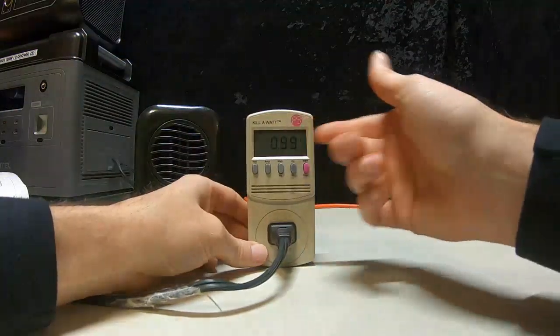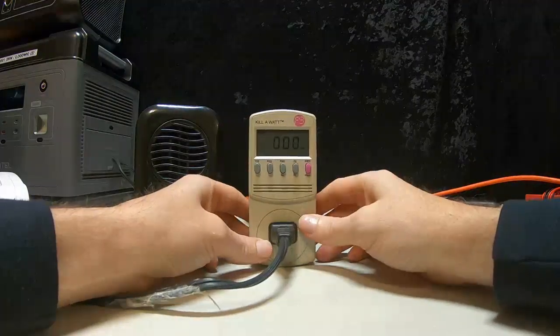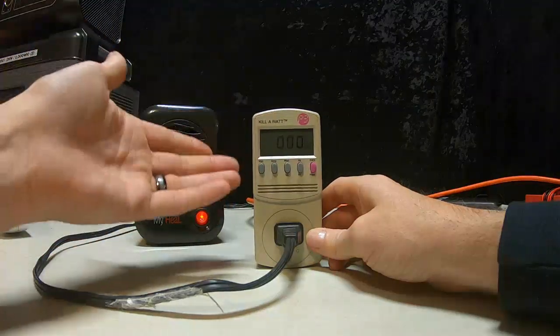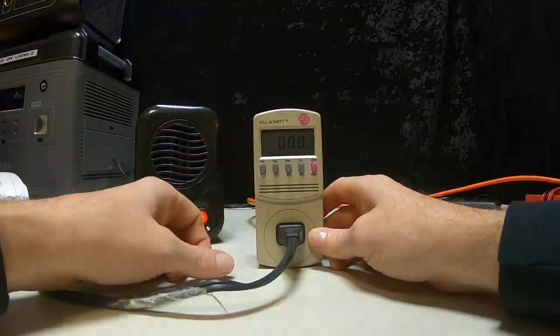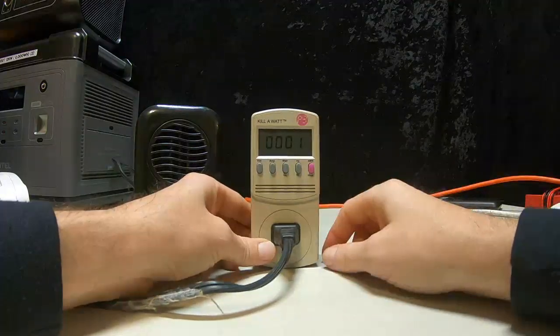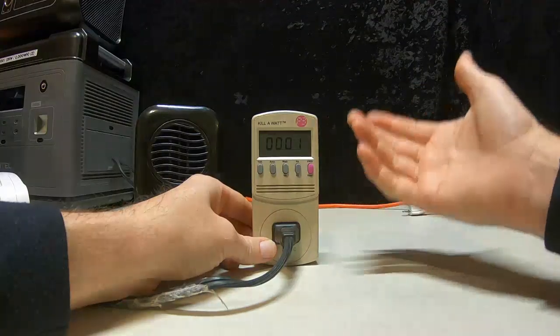And then you have your kilowatt hours. That's how much power you have used since you've plugged this in the wall and kept track of it. And then you have your total time, so it's been running about a minute.